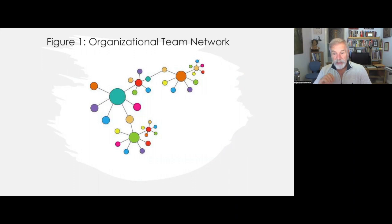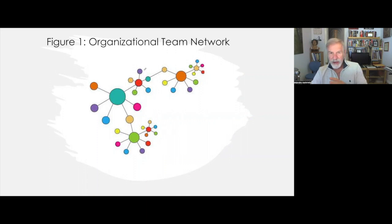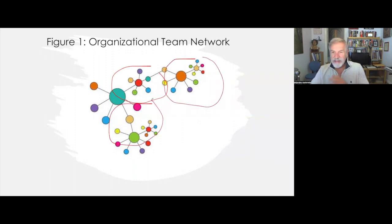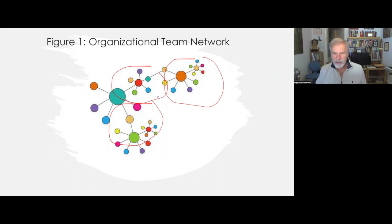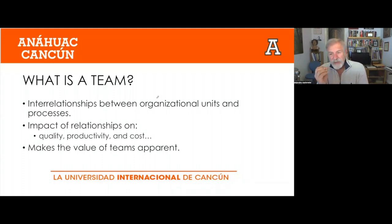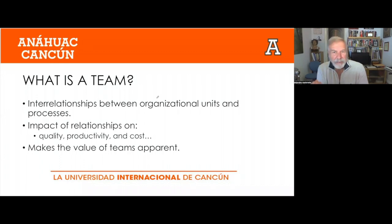The structure will get more complex. Many teams, as you can see in this diagram, expose what in reality happens a lot — different teams organized in companies. This is exactly the organism of any institution, whether it's a hotel or a law firm. Understanding the many interrelationships that exist between organizational units and processes, and the impact of this relationship on quality, productivity, and cost, makes the value of teams very, very apparent.